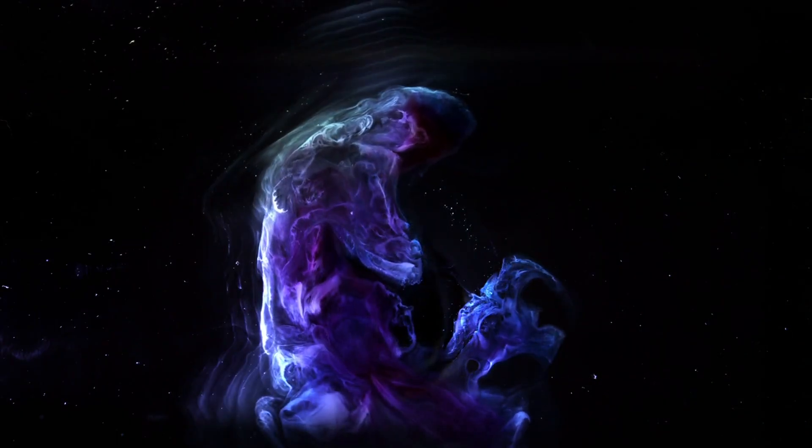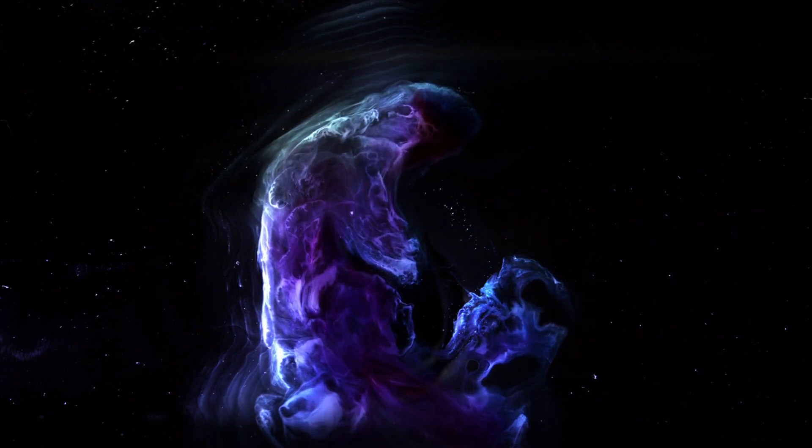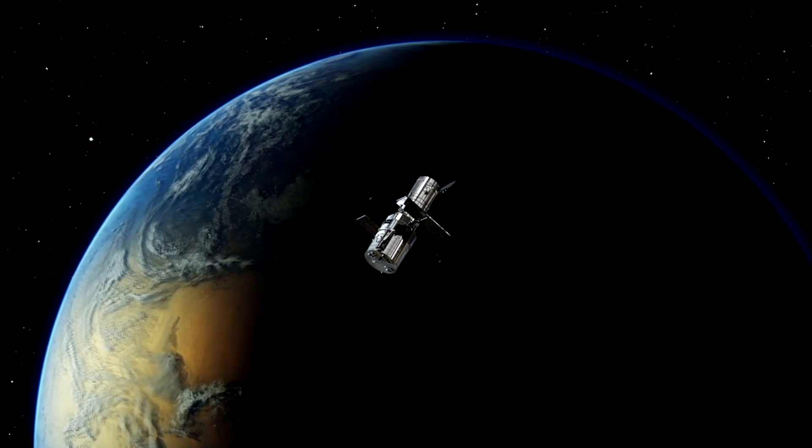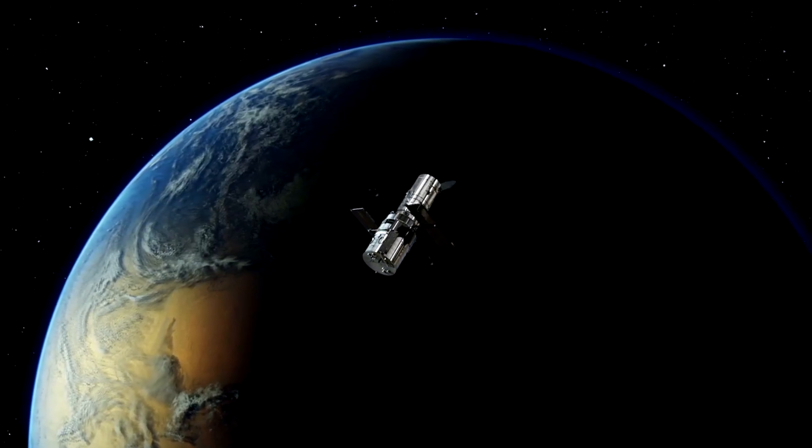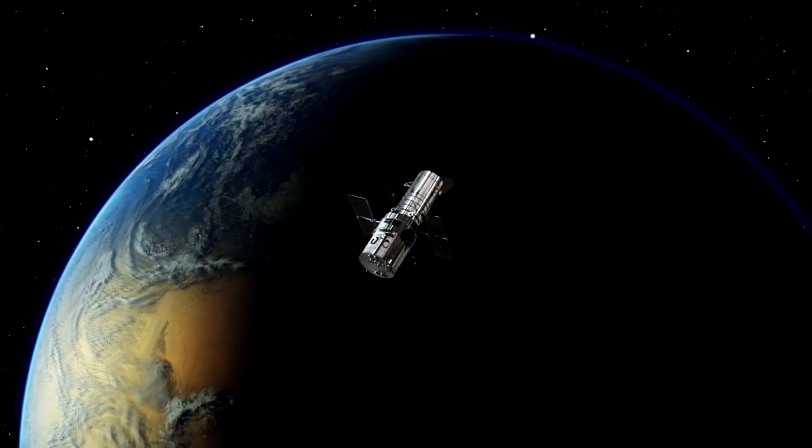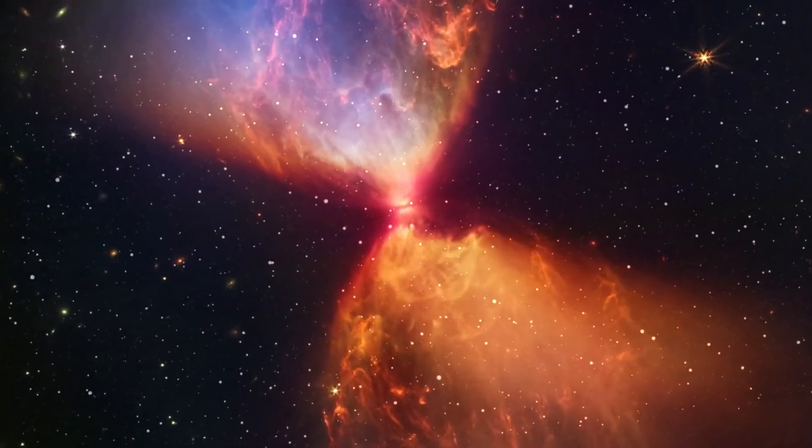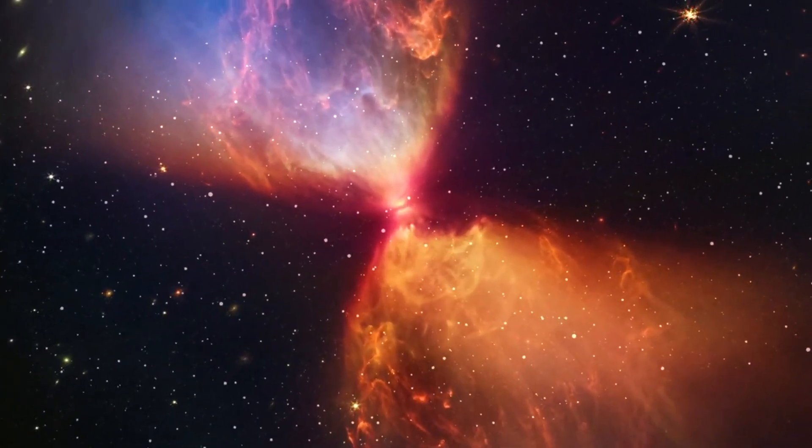One of the most recognizable views from the Hubble Space Telescope has long been the pillars of creation in the Eagle Nebula. While the spectacular cloud surrounding the building were visible to the telescope, which primarily detects visible light, the creation taking place within them was not. It has now been captured by Webb's infrared imaging in the form of many protostars.